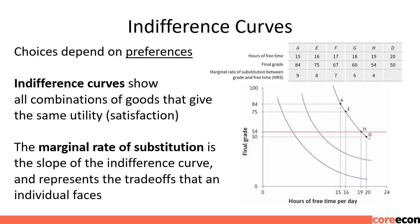We graph indifference curves by putting one good on each axis — final grade going from 0 to 100 on the vertical axis, and hours of free time per day going from 0 to 24 on the horizontal axis. At the origin — 0 final grade and 0 free time — is the worst possible outcome. As we move away from the origin, a point with 100 for a final grade and 24 hours of free time would be the best possible outcome. Indifference curves that are further away from the origin are more preferable to the ones closer to it.